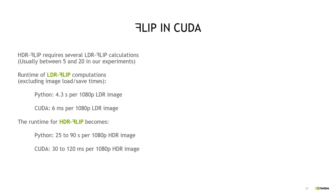Now let's make a few notes on the HDR FLIP runtime. HDR FLIP requires one LDR FLIP computation per exposure. In our experiments, the automatically found number of exposures has usually been between 5 and 20. In our Python implementation, the runtime of LDR FLIP is about 4 seconds per 1080p image, resulting in HDR FLIP runtimes of about 25 to 90 seconds. We have also implemented LDR FLIP in CUDA, where the runtime is about 6 milliseconds per 1080p image, resulting in HDR FLIP runtimes of about 30 to 120 milliseconds.